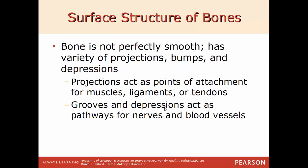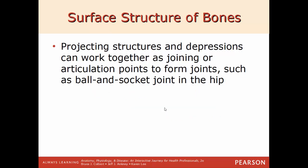Next we'll talk about the surface structure of bones. A bone is not perfectly smooth — there are a variety of bumps, ridges, projections, and depressions, each with their own unique name. Knowing what these terms mean makes identifying bone features much easier. These projections act as points of attachment for various muscles, ligaments, or tendons, and the grooves and depressions act as pathways for nerves and blood vessels.